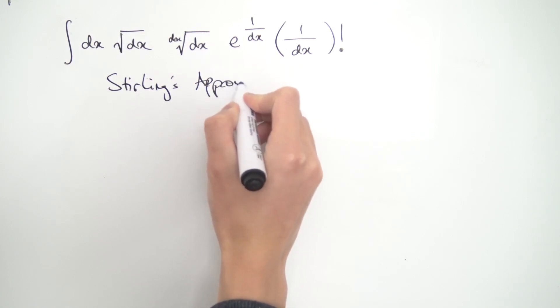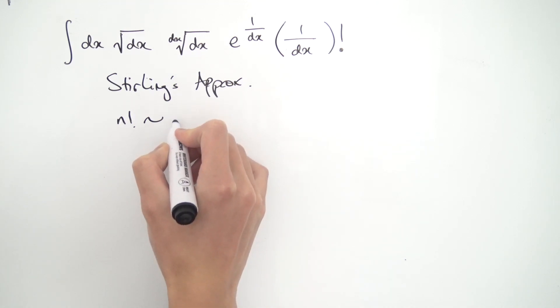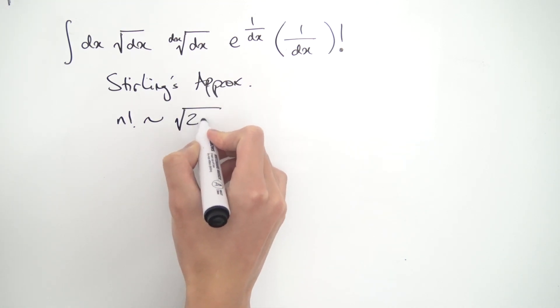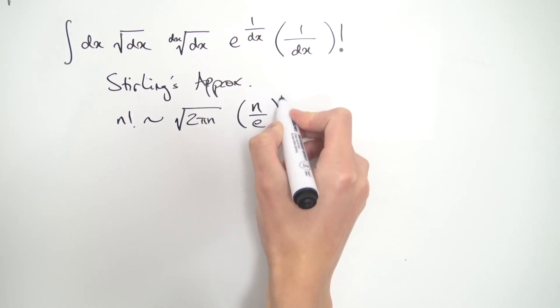What is Stirling's approximation? Well it says that n factorial is asymptotically equal to, we have this square root of 2 pi n, and we have n over e to the power of n.